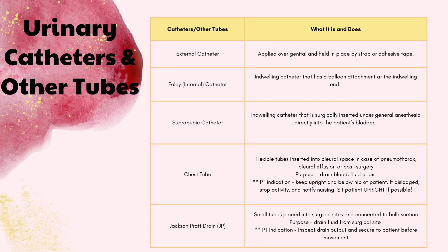Next we have urinary catheters and other types of tubes. First off we have an external catheter, which is a condom catheter for a male and a perineal pouch for a female. It is applied over the genitalia and held in place by a strap or adhesive tape. Next we have a Foley, also known as an internal catheter. This is an indwelling catheter with a balloon attachment on the end, so when they insert it they inflate the balloon so it doesn't come out if pulled.